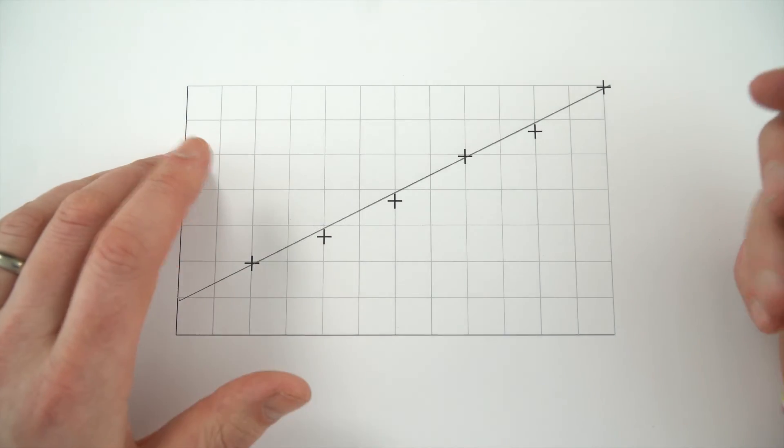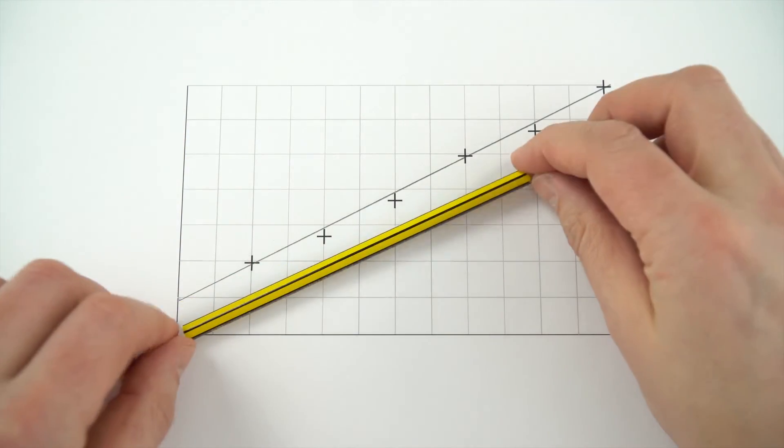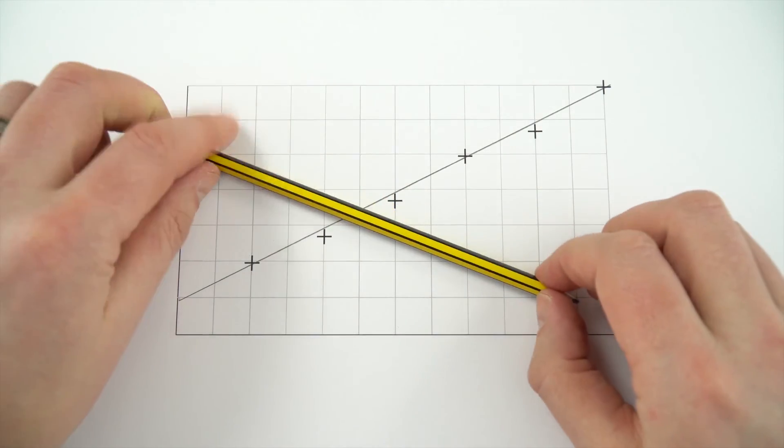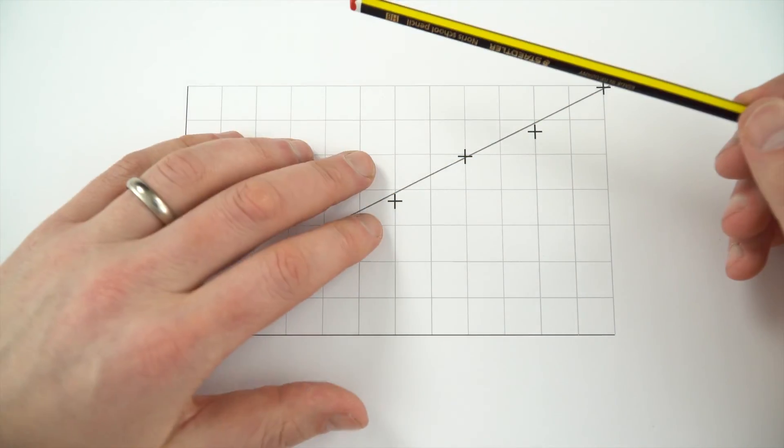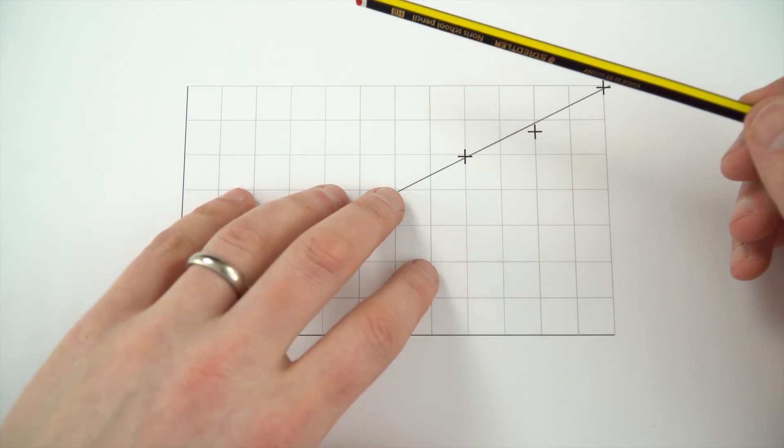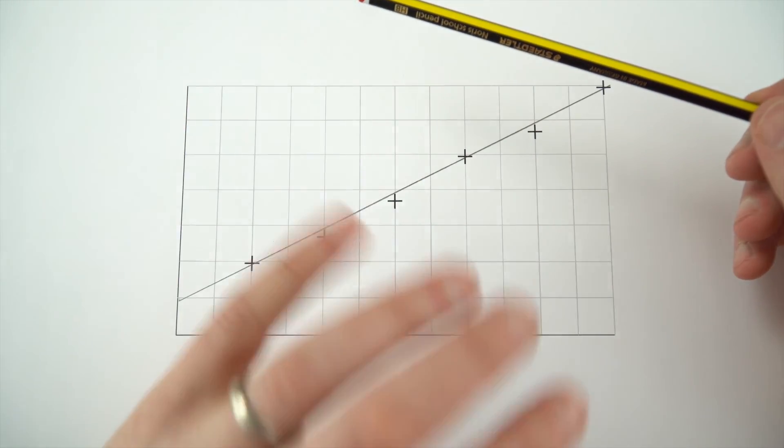So that's how to draw a line of best fit. It can be going through the origin, it might go through the y-axis, it might be negative or it might be one of these curved shapes. So next time you get some data, just have a look at the data that you've plotted and see which trend line is most appropriate.